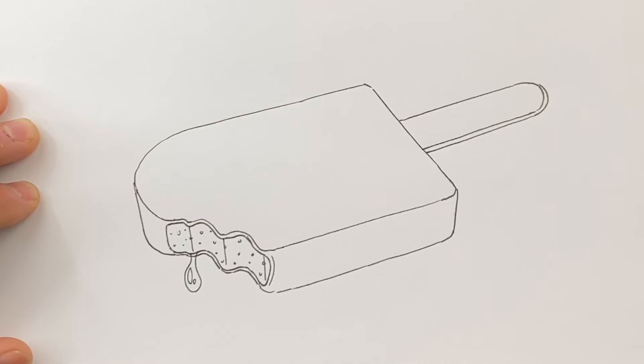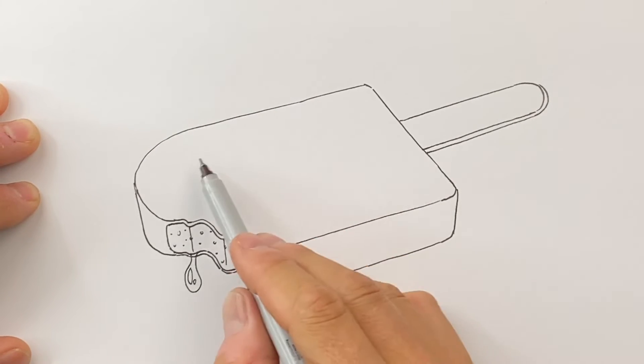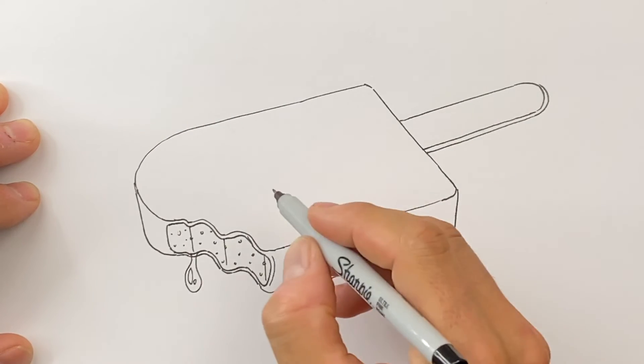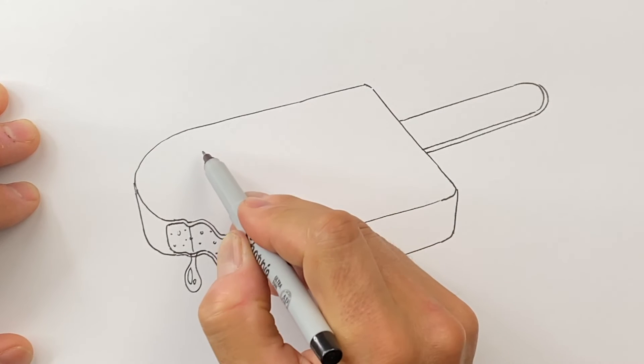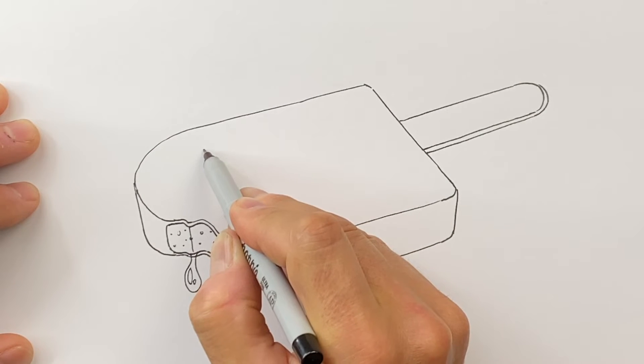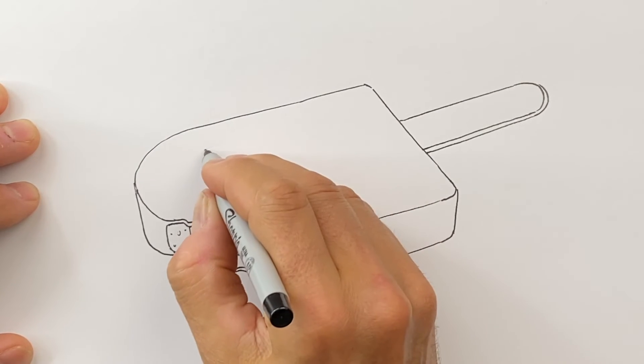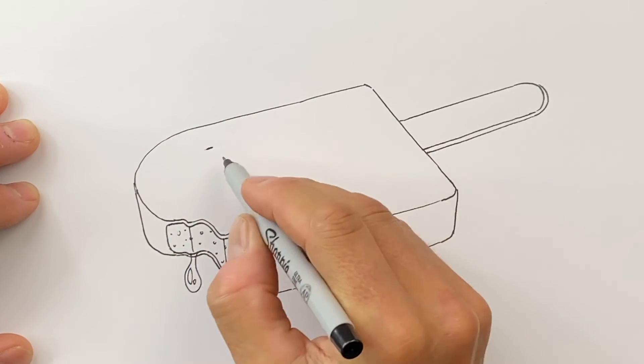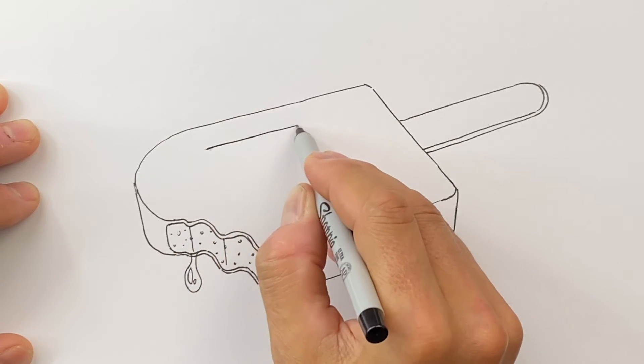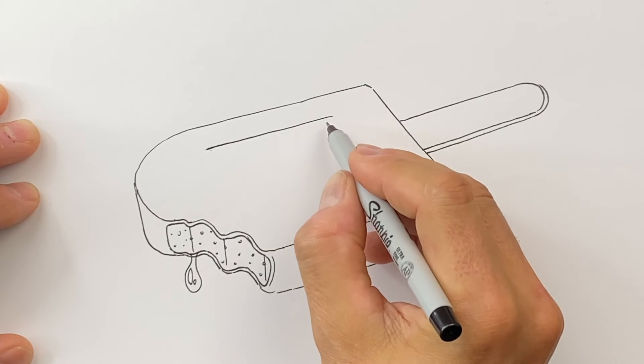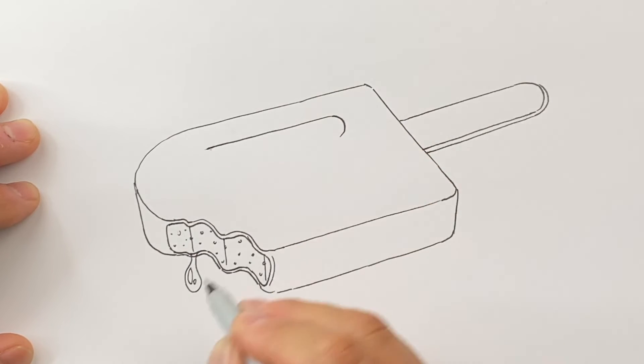Alright, the next thing we'll do is we'll draw these two ridges in our popsicle. So I'm gonna go and draw a line that's parallel to this line. We'll draw one line like this, and then as I get down here I'm just gonna round this like that.